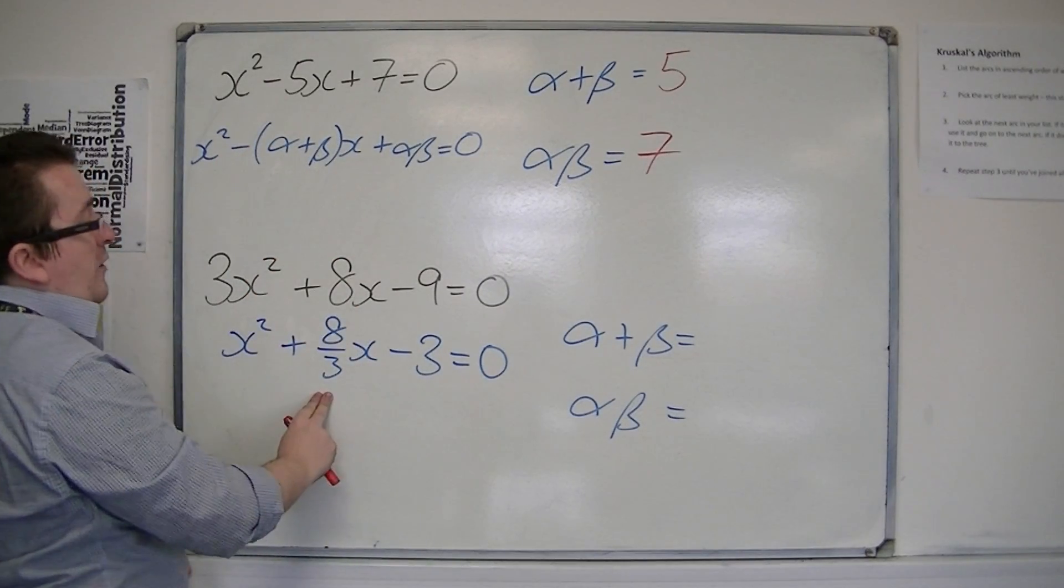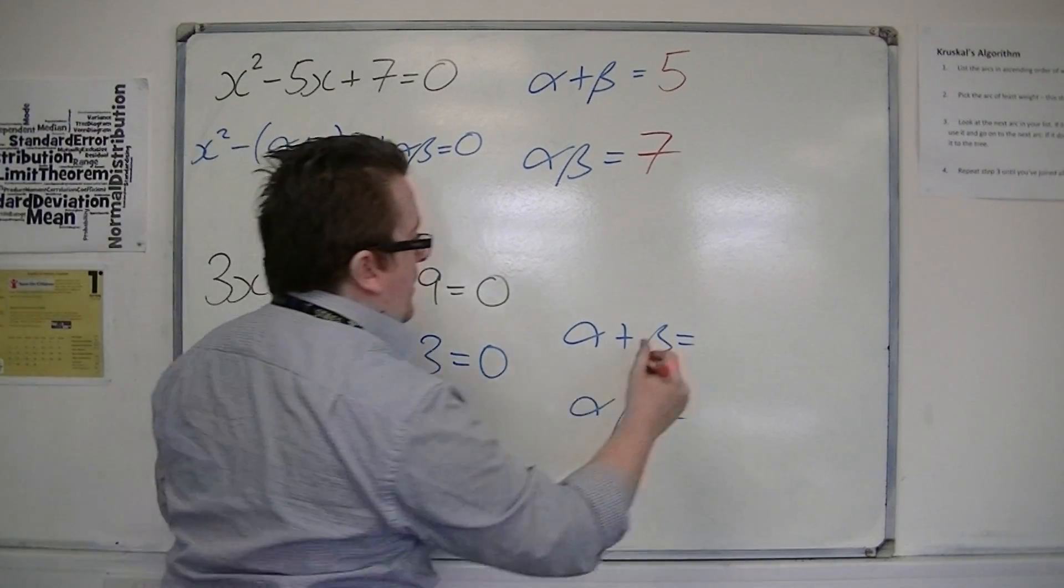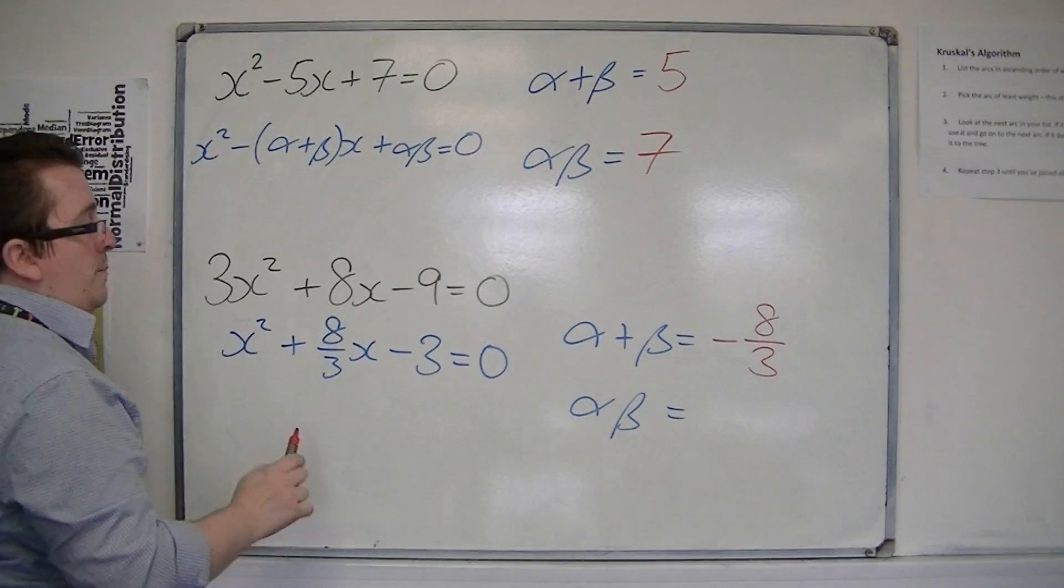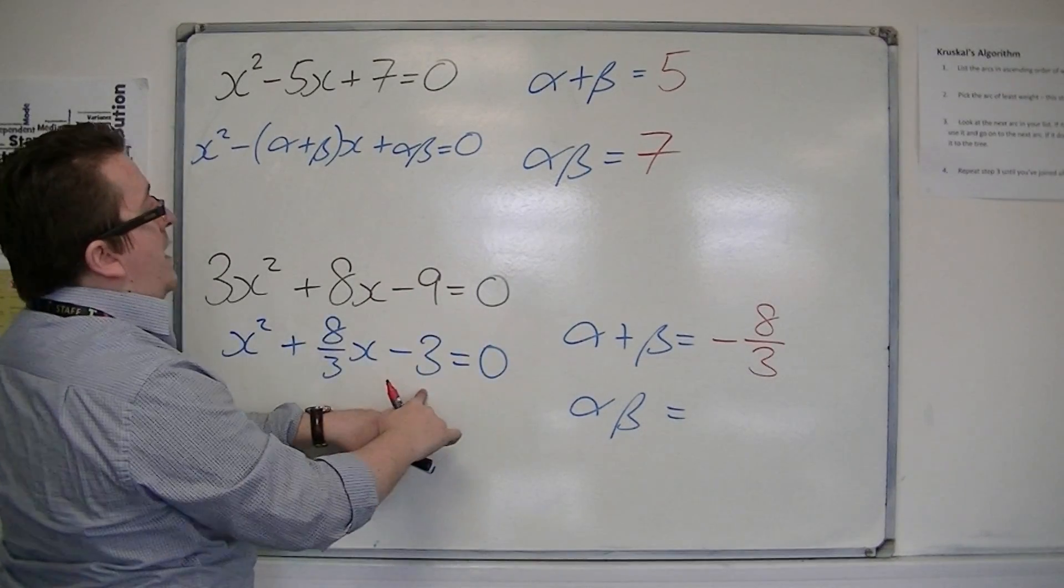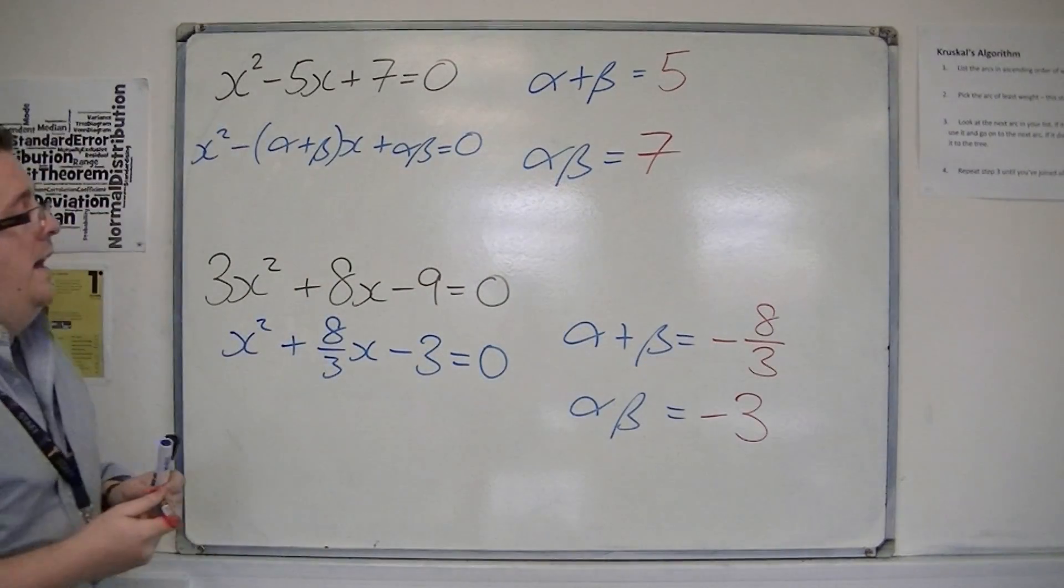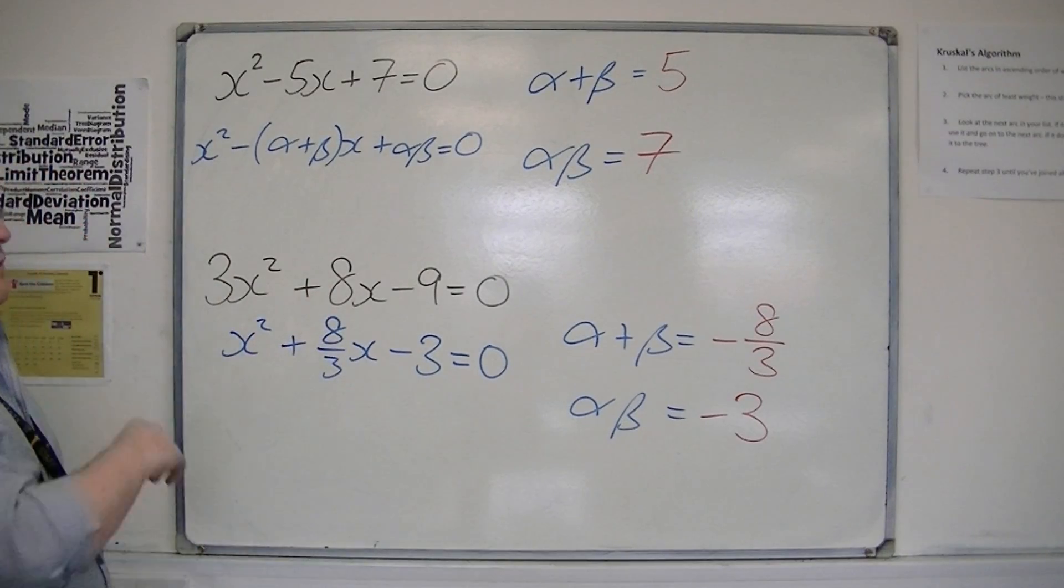alpha plus beta must be minus 8 thirds to cancel with that minus. So that must be minus 8 thirds. And alpha beta must be minus 3. And that's how we can identify the sum and the product of the roots.